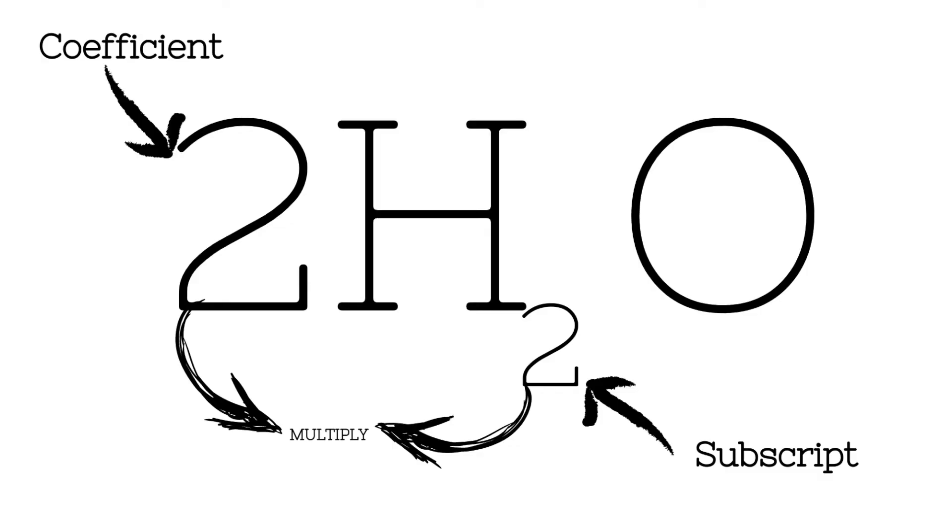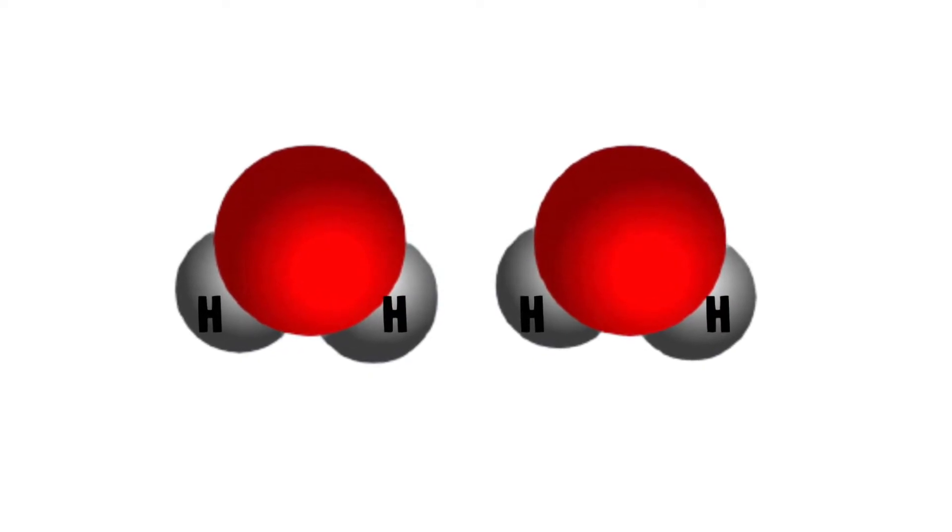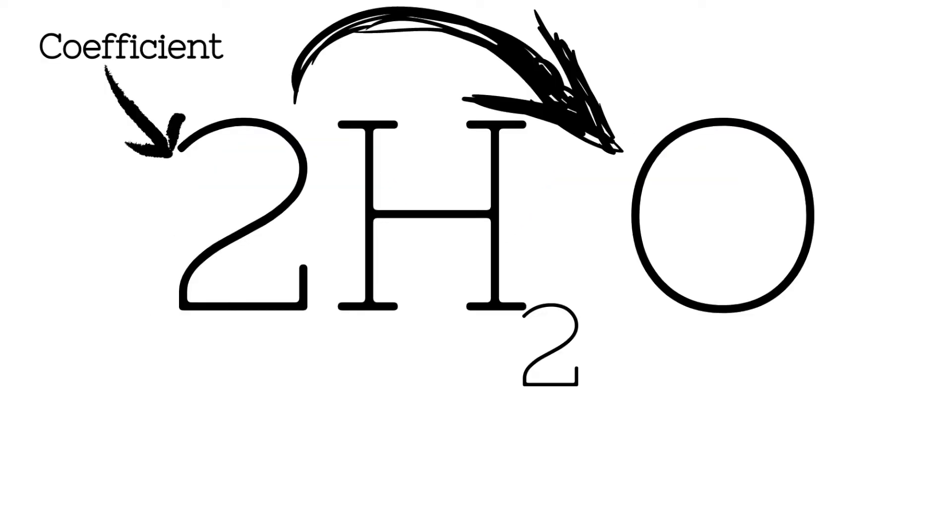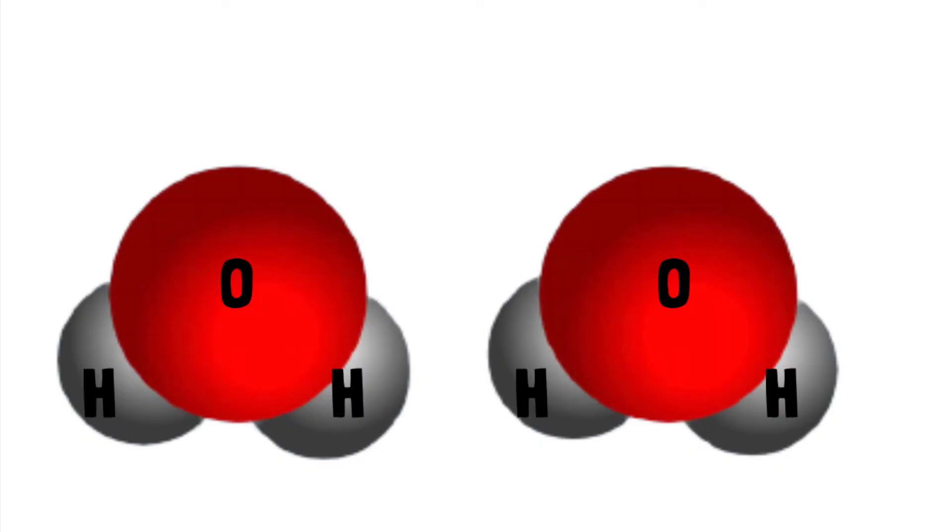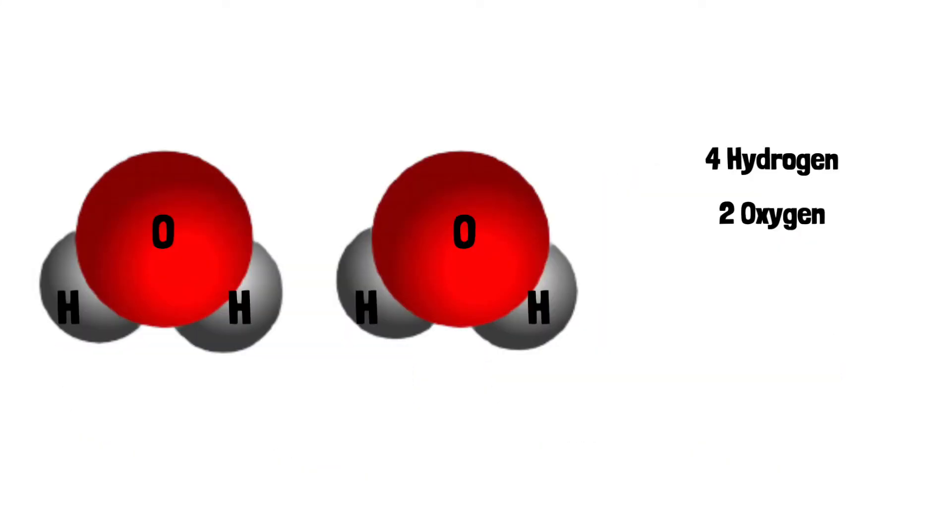So how do we get the 4 hydrogen? Well we take the coefficient and we multiply it times the subscript, just like we did before. 2 times 2 is going to give us 4 hydrogens. Then we take that same coefficient and we distribute it throughout the molecule. So it actually applies to the oxygen as well. That gives us 2 oxygen for a total of 4 hydrogen and 2 oxygen.